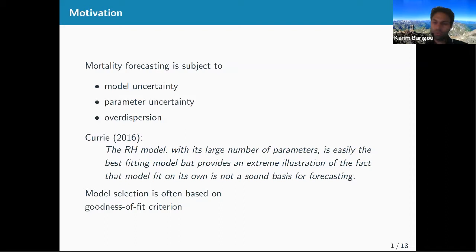Moreover, when you work in a frequentist framework, usually what you get at the end is one parameter, but there is uncertainty that this parameter is wrong. That's also an important source of uncertainty. Additionally, mortality forecasting is subject to over-dispersion — if you fit a simple model, you will often see that the variance is higher than the mean.